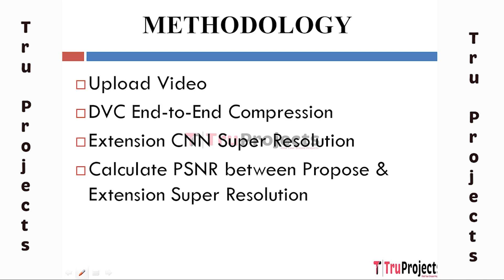The fourth module is Calculate PSNR between Proposed and Extension Super Resolution. The peak signal-to-noise ratio, PSNR, is a metric used to evaluate the quality of reconstructed images compared to the original images. The PSNR is calculated between the result of the proposed DVC with CNN super-resolution and the Extension DVC with CNN super-resolution. A higher PSNR value indicates better image quality and similarity to the original.